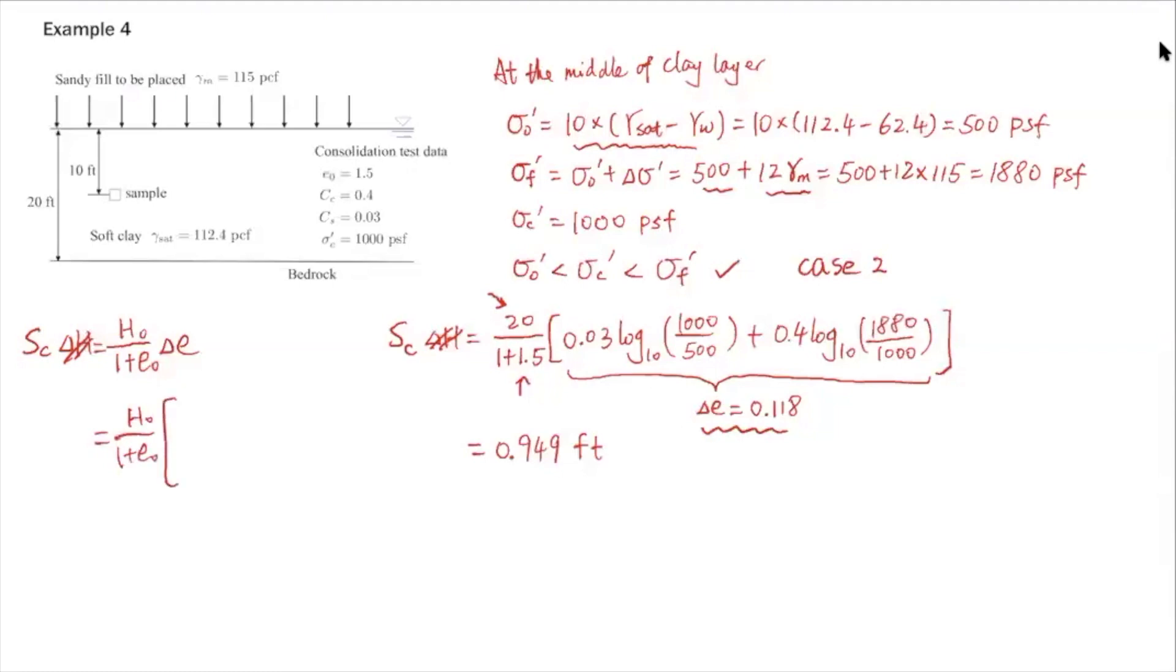Delta E has these two components. We have first the recompression portion, that is the first term: Cs, that's the slope of the recompression curve, times log 10 of sigma C prime over sigma 0 prime. Then plus Cc, that's the compression index, times log 10 of sigma F prime over sigma C prime. That's the second term here.